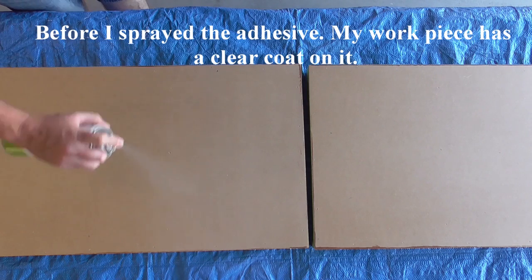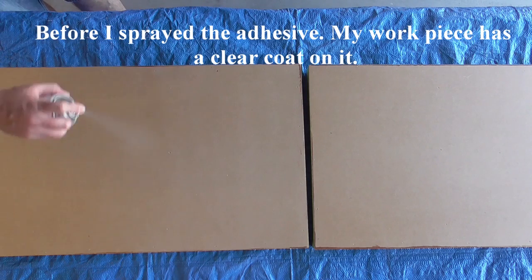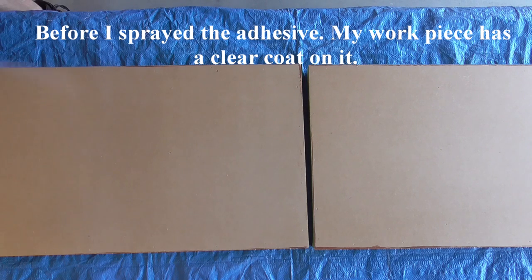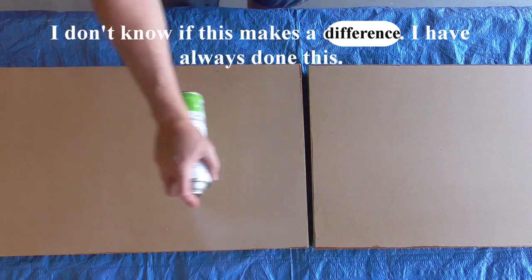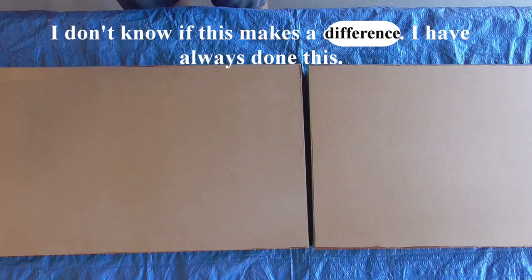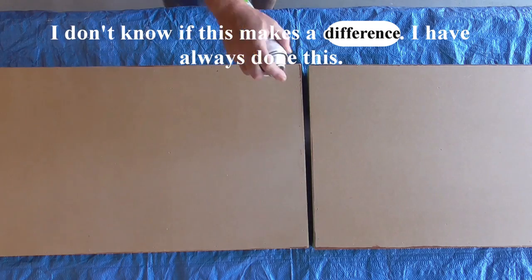Here is a spray can adhesive. I'm spraying about 20 centimeters away and giving it a good coat. You want to do this to both surfaces that you're going to attach just so you can get a really strong bond. If you only do it to one side, there's a chance it's not going to stick too well and you can just pull it up later.